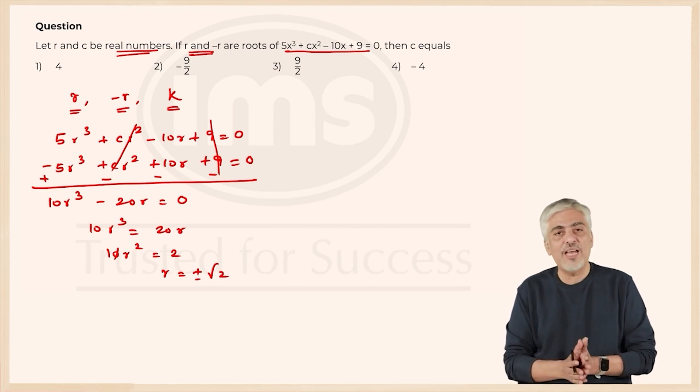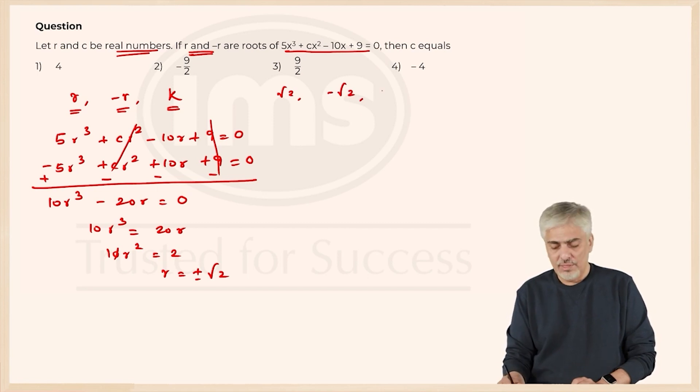So, r is plus or minus √2. So, the two values which we have, the two roots which we have, one of them is √2 and the other is -√2. Third is still k, which means by putting √2 in the question, it should satisfy.